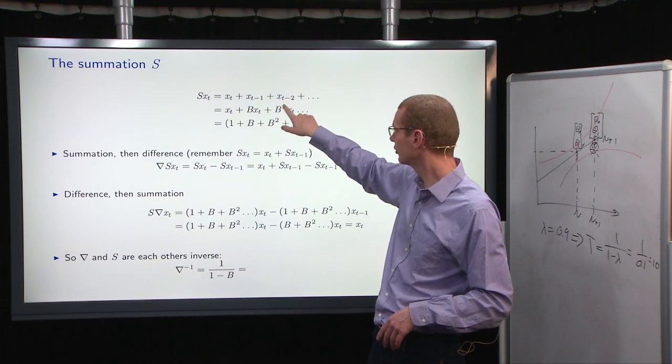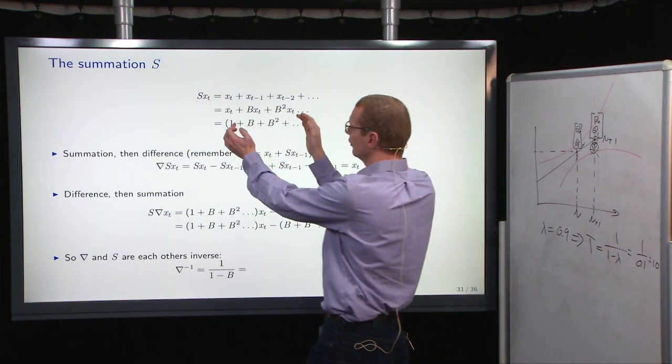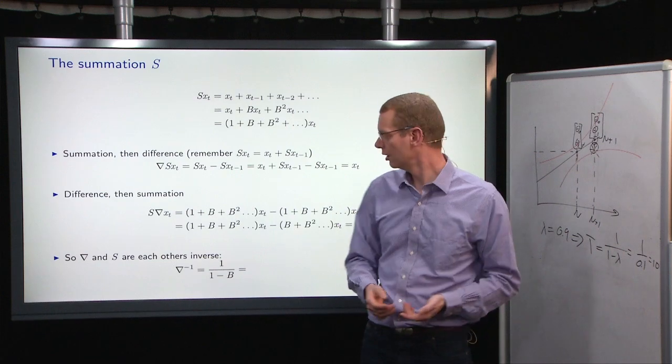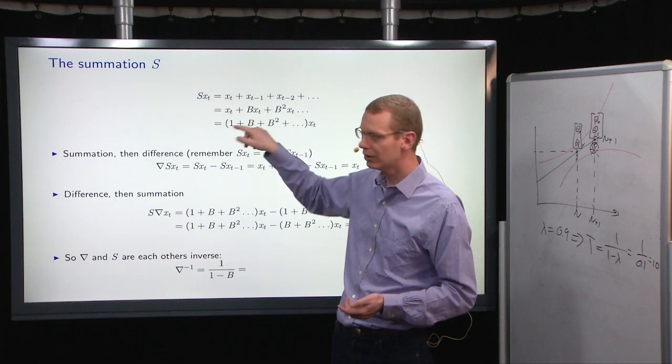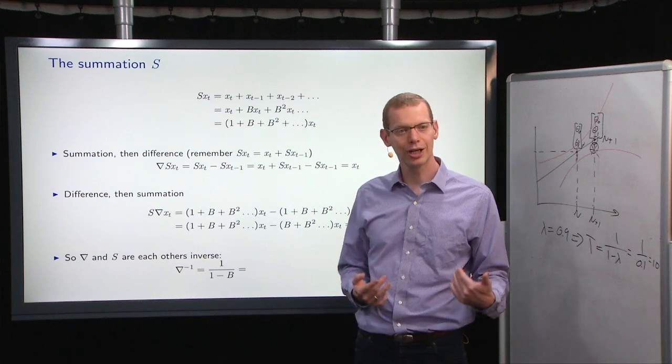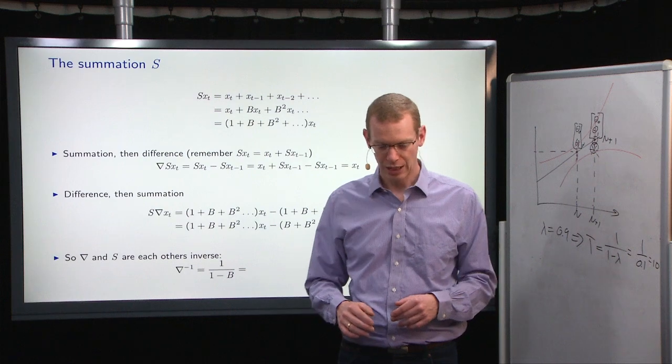x_{t-2} is B to the second power x_t, and so forth. So we can have this infinite polynomial just with the powers of B. And we can say B to the zero power is just the identity operator. To go zero steps backwards in time is to stay where you are. That makes a lot of sense.